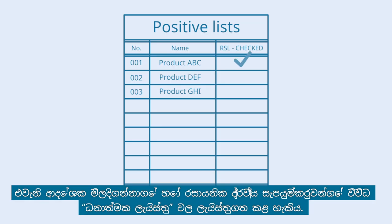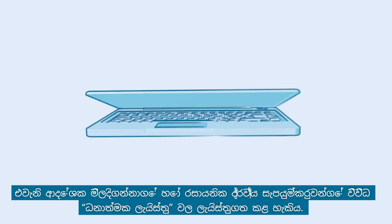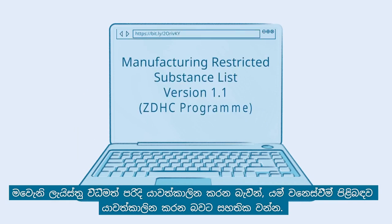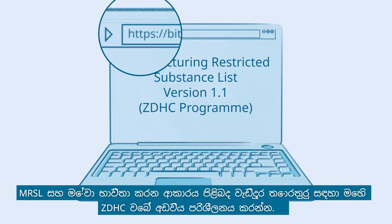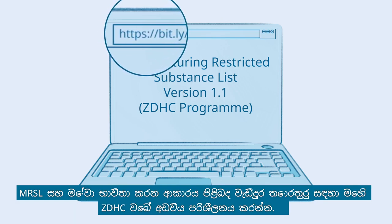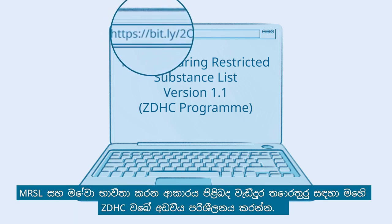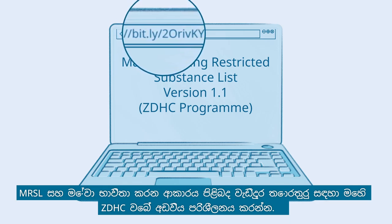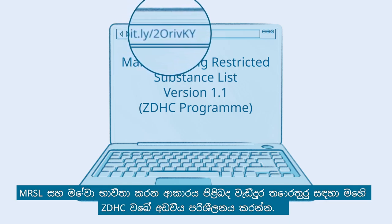Such substitutes may be listed on separate positive lists from buyers or chemical suppliers. Since these lists are updated regularly, make sure to stay up-to-date about any changes. For more information on MRSL and how to use them, visit the ZDHC website here.